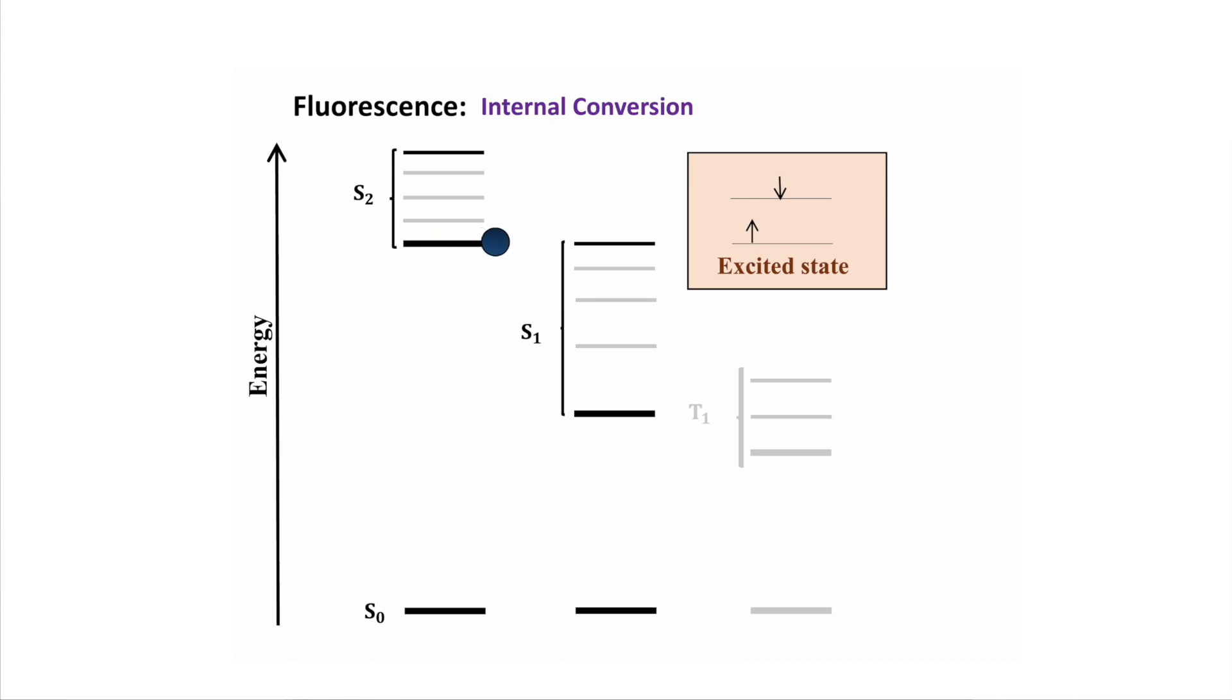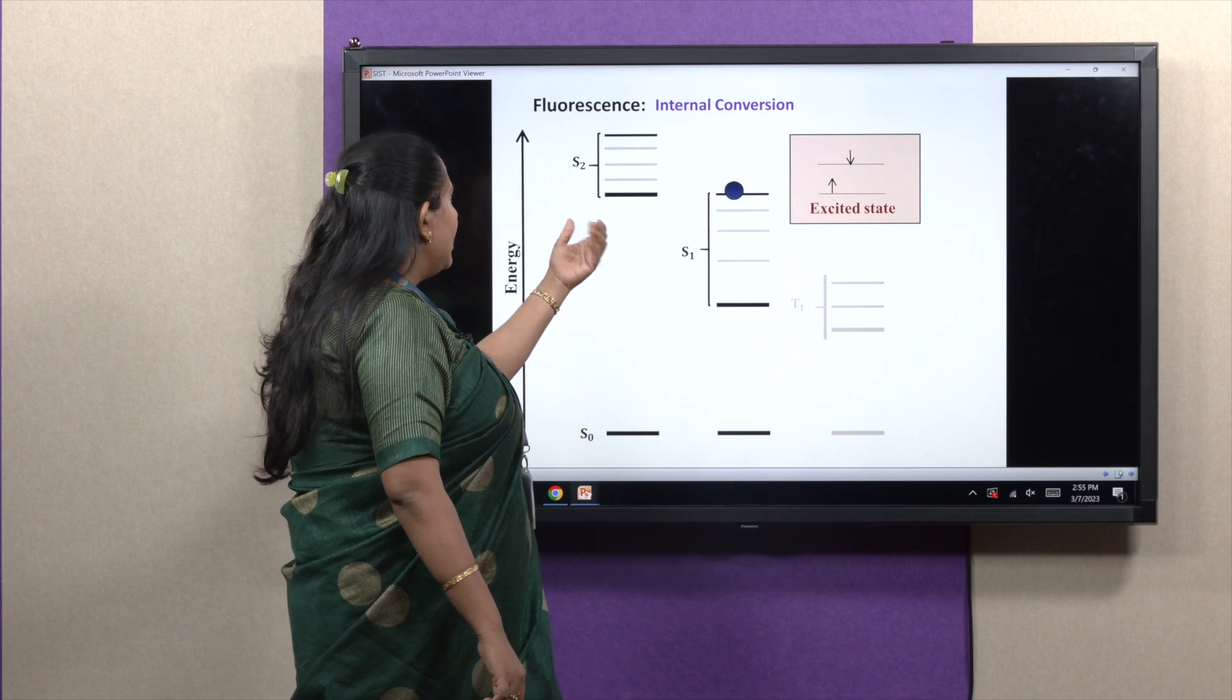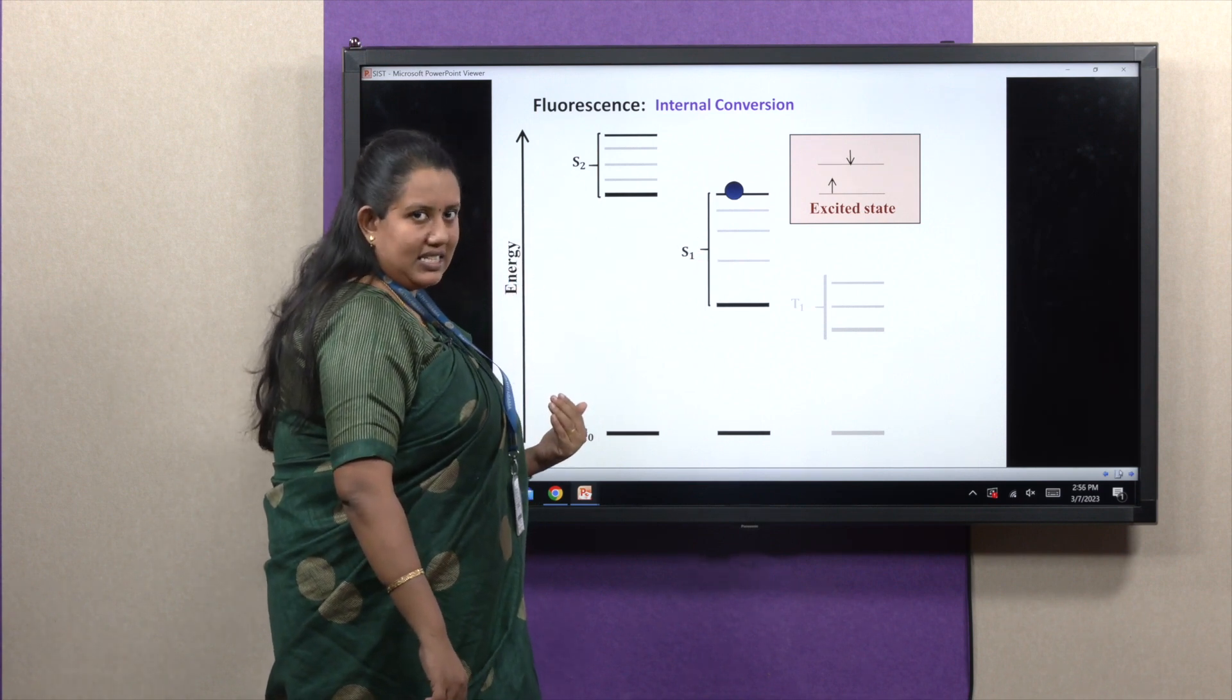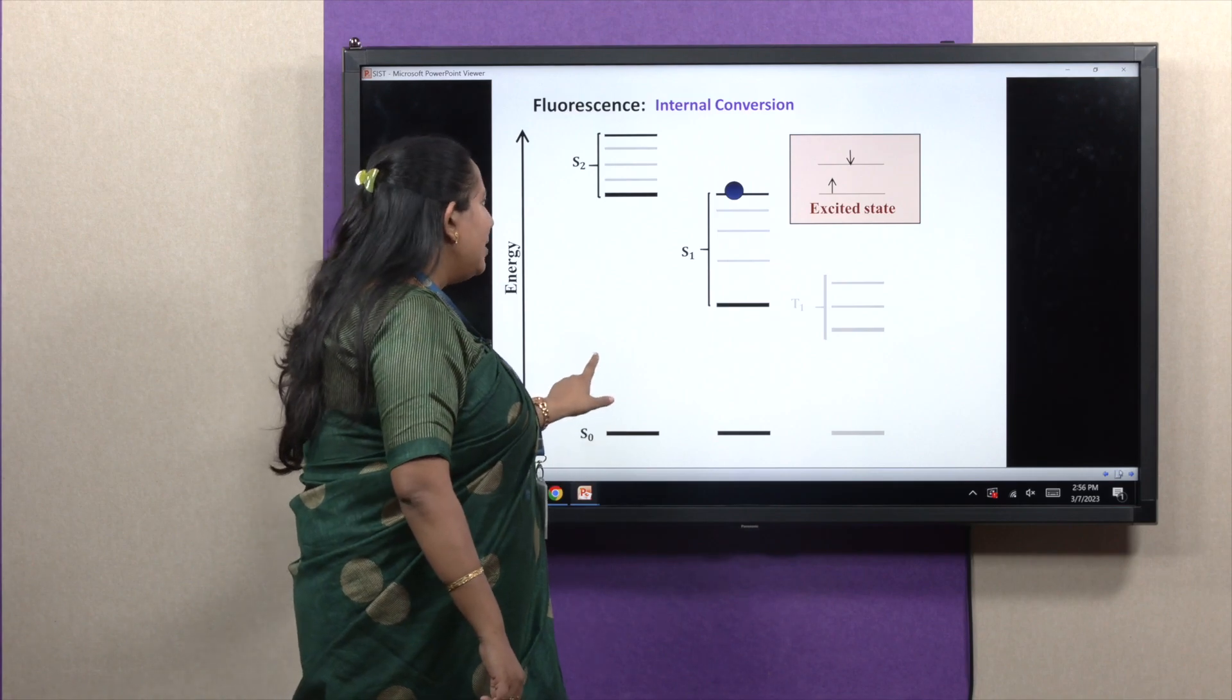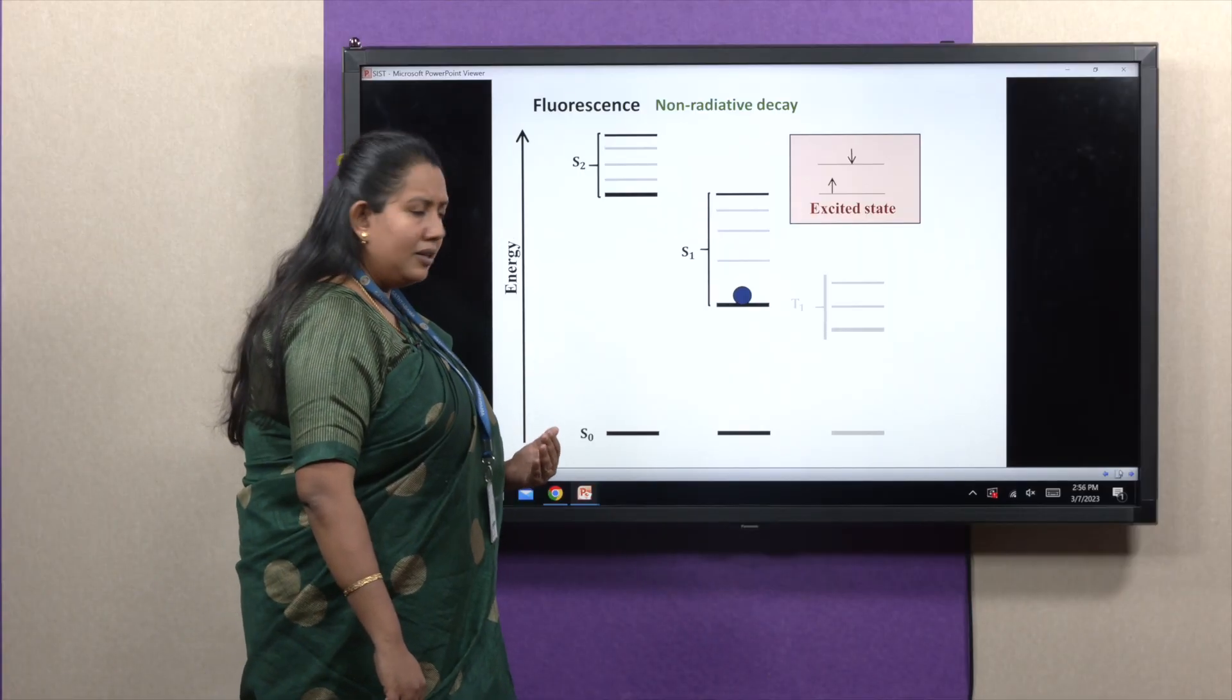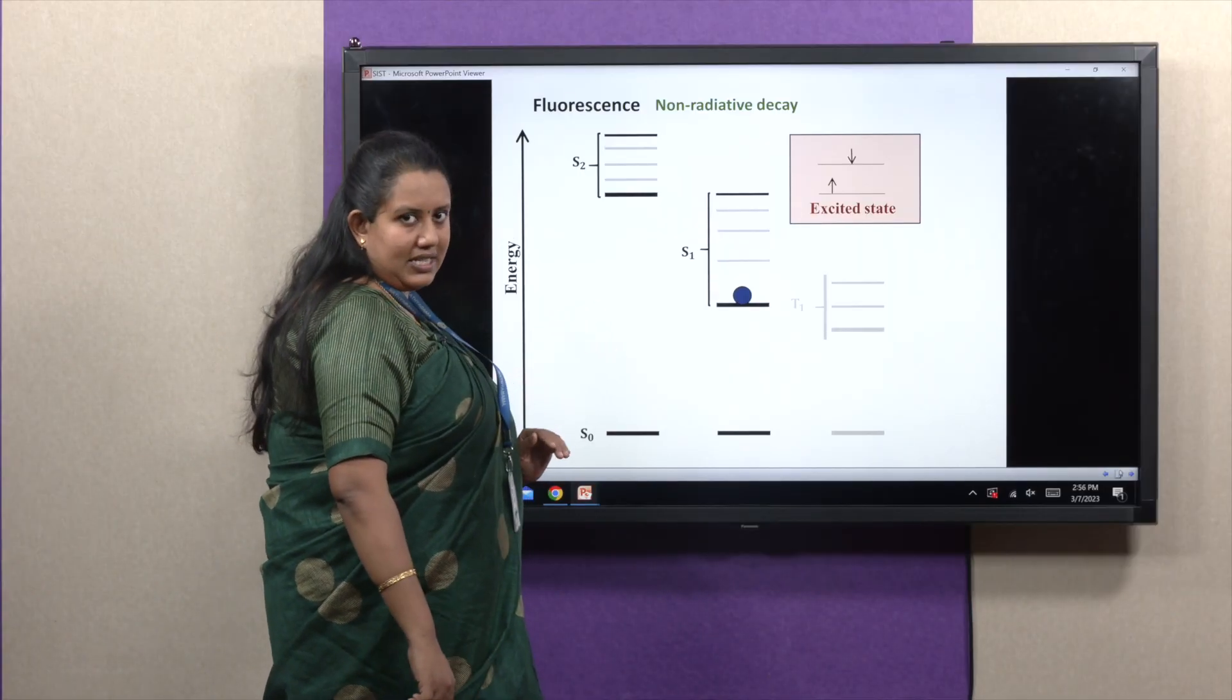Another similar non-radiative decay channel is internal conversion. In this process, molecules will move from second excited state to another excited state, first excited state. Similar process like vibrational relaxation, it can come back to the lowest vibrational level of first electronic excited state.